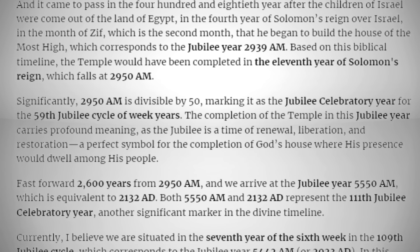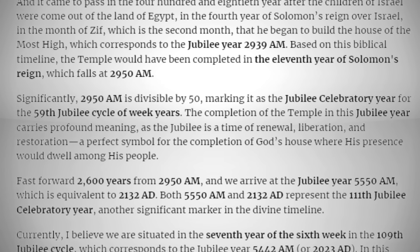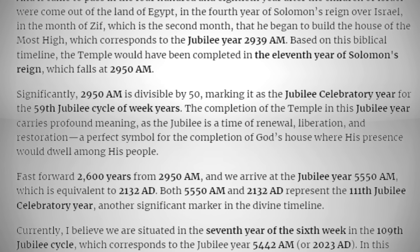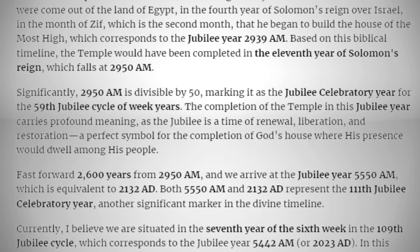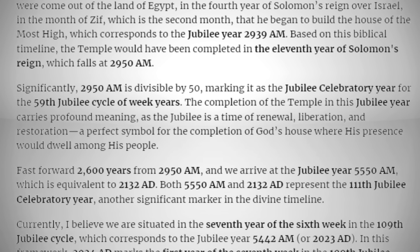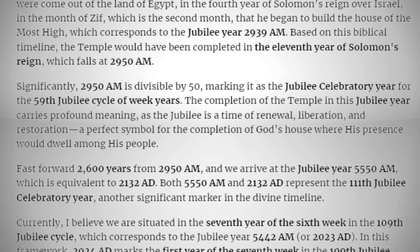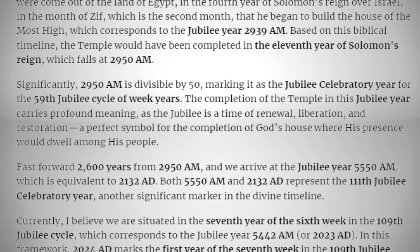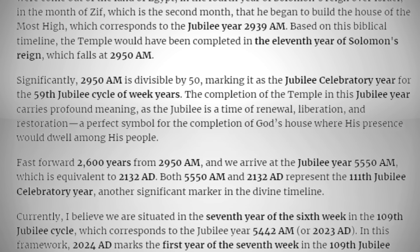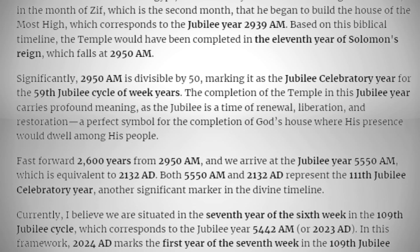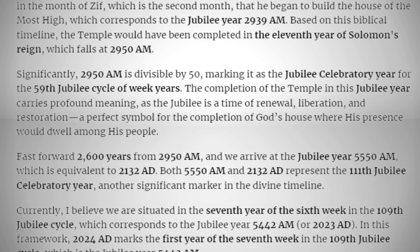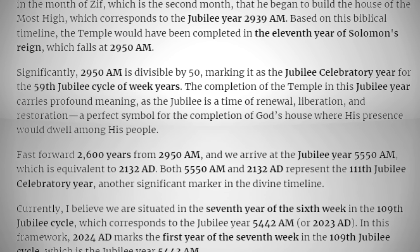Fast forward 2,600 years from 2950 AM and we arrive at the jubilee year 5550 AM — equivalent to 2132 AD. Both 5550 AM and 2132 AD represent the 111th jubilee celebratory year, another significant marker in the divine timeline. Currently, I believe we are situated in the seventh year of the sixth week in the 109th jubilee cycle, which corresponds to the jubilee year 5442 AM or 2023 AD. In this framework, 2024 marks the first year of the seventh week in the 109th jubilee cycle, which is the jubilee year 5443 AM.